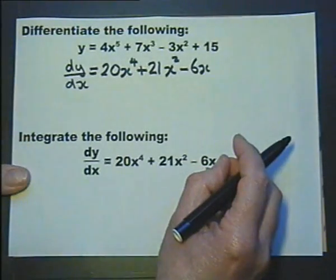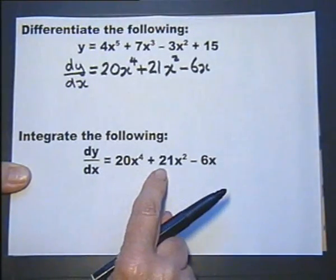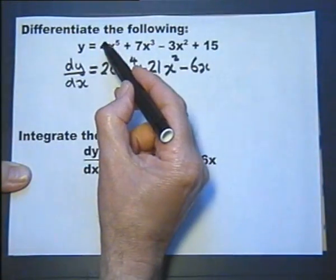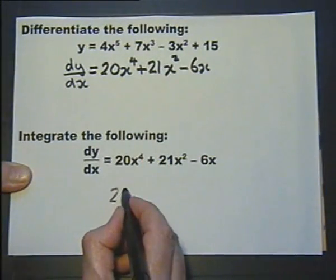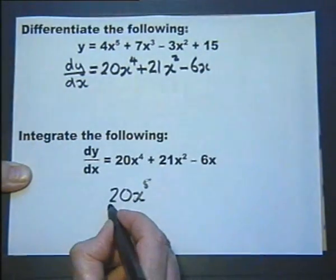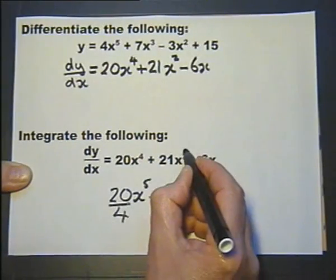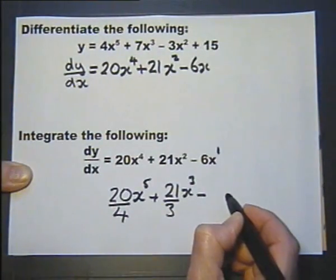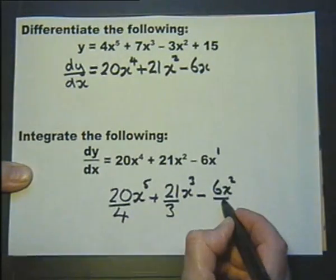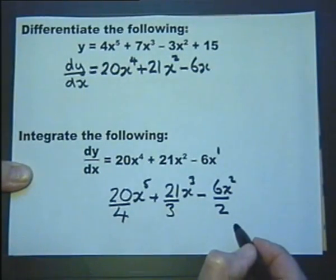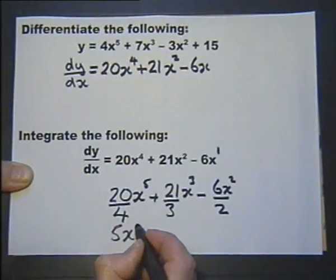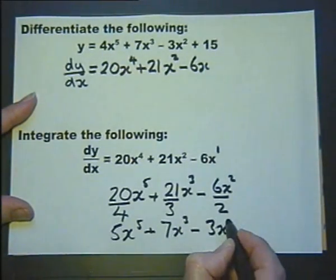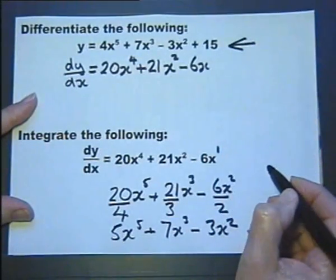The reverse process is to integrate. So if I start with the derivative and integrate it, I want to get back to the original. Think about what we did — we did 5 times 4 and dropped the power by 1. So to completely reverse it, we raise the power by 1 and divide by that new power. Raising each term by 1 power and dividing by the new power — that's integration. Simplifying the fractions: that cancels to 5, that cancels to 7, and that cancels to 3, giving us back the original expression.